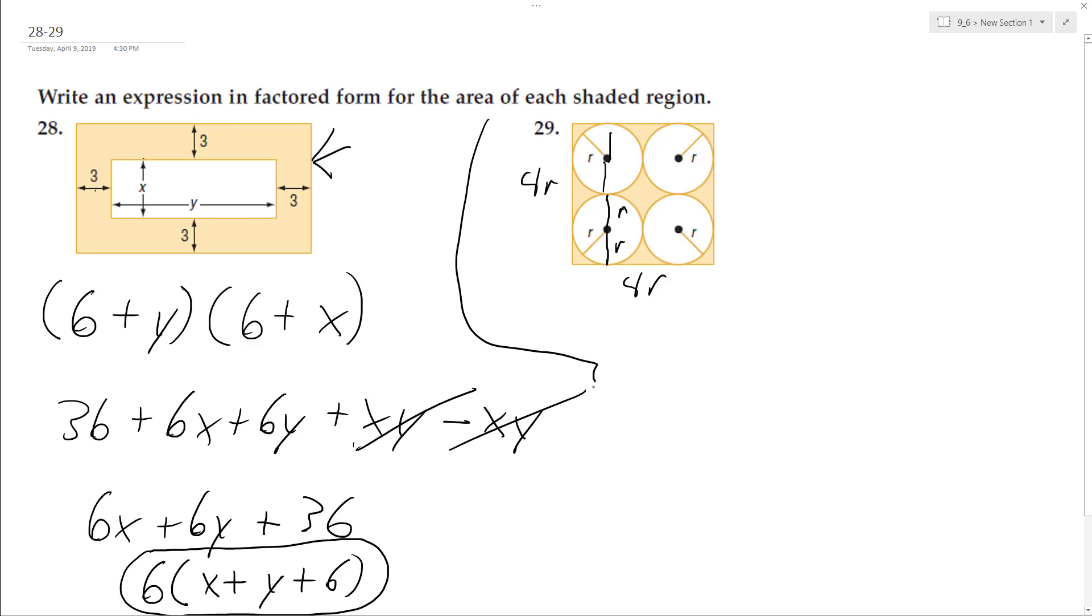So the area is going to be equal to 4r times 4r. So this is the entire region, and then minus 4 circles times pi r squared. So we end up with 16r squared minus 4 pi r squared.